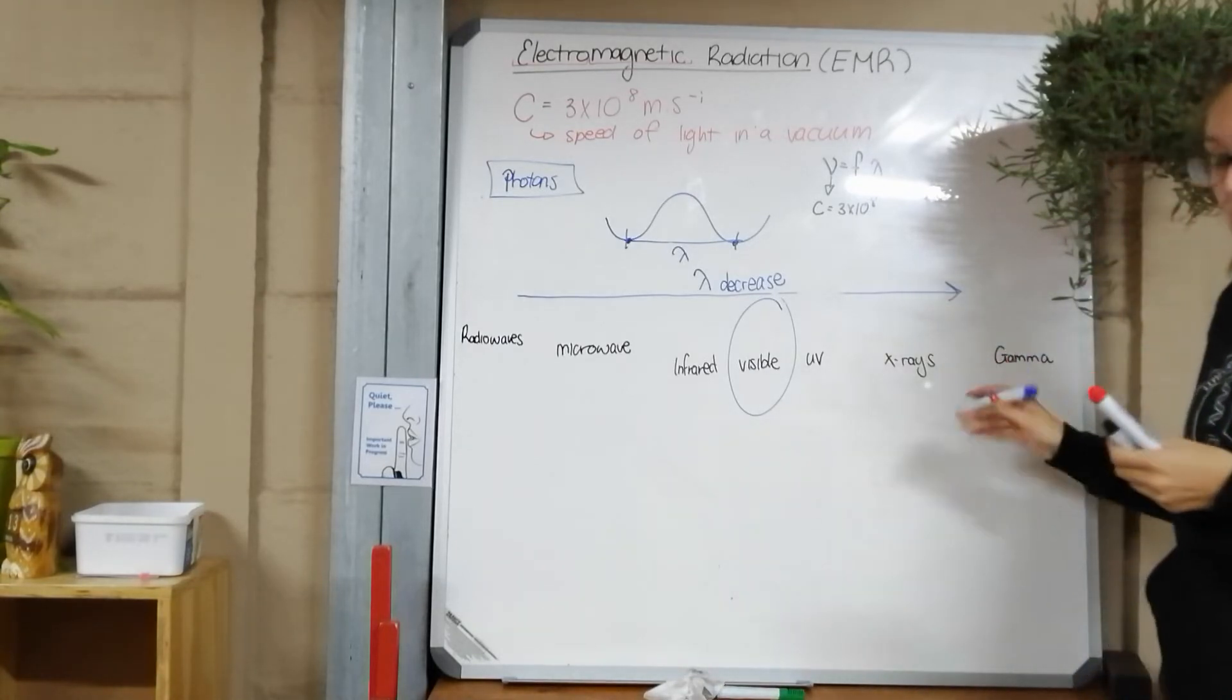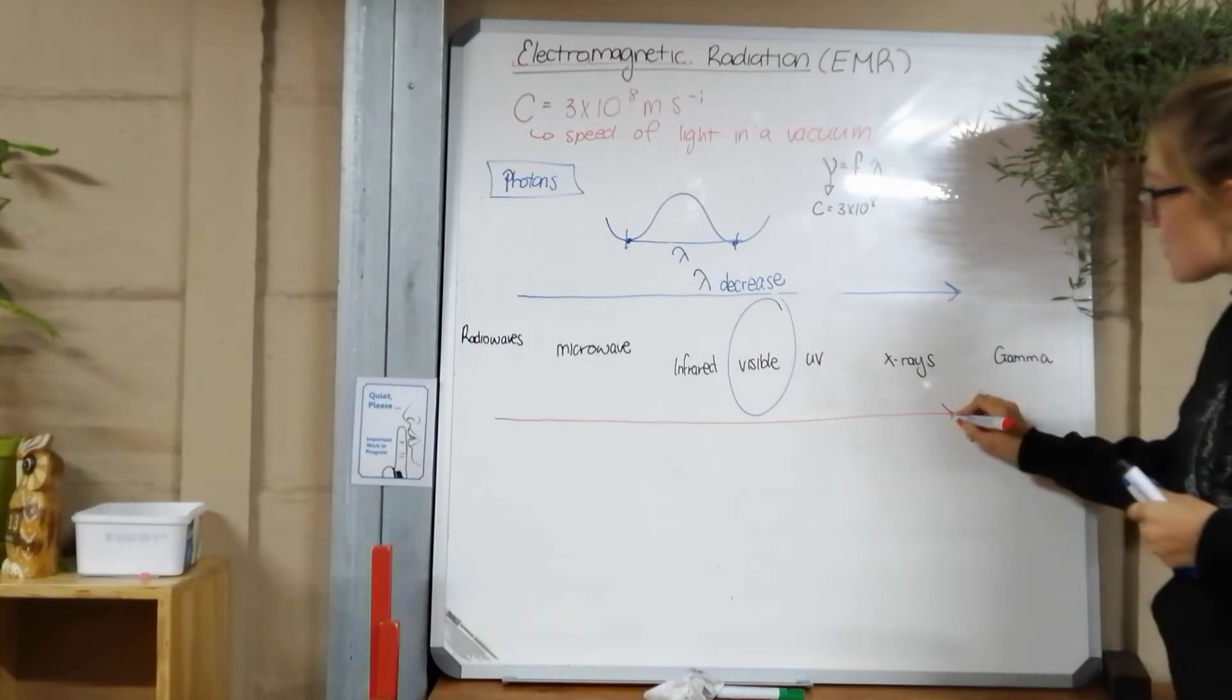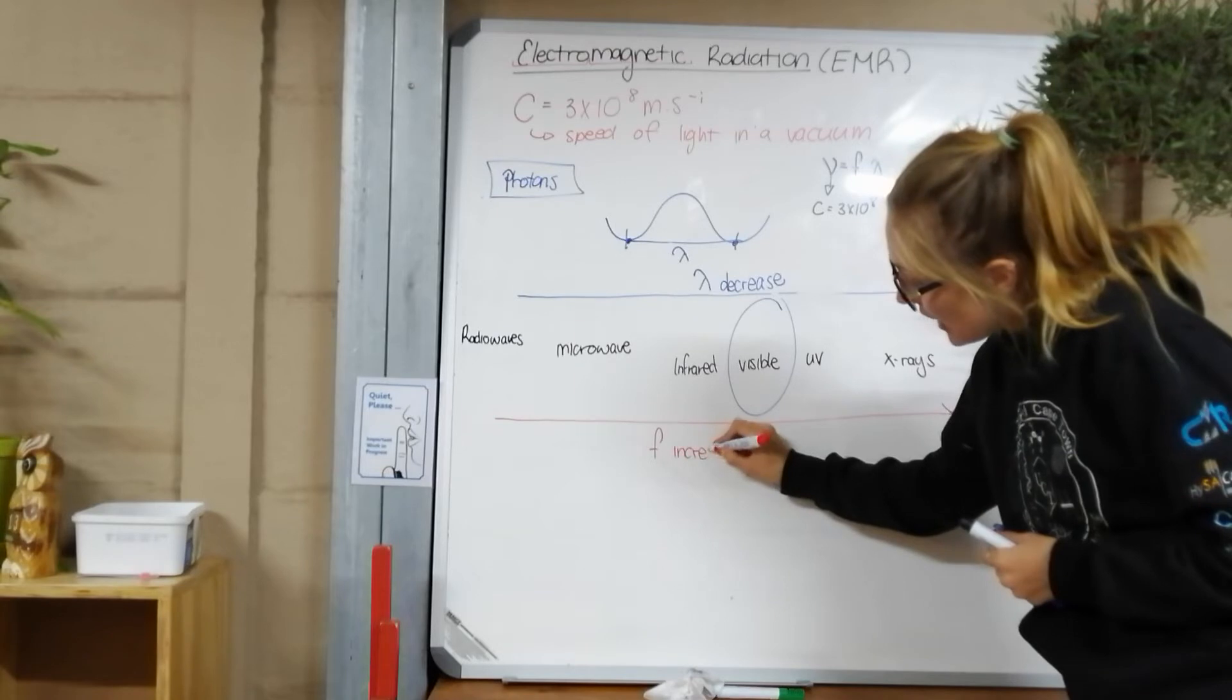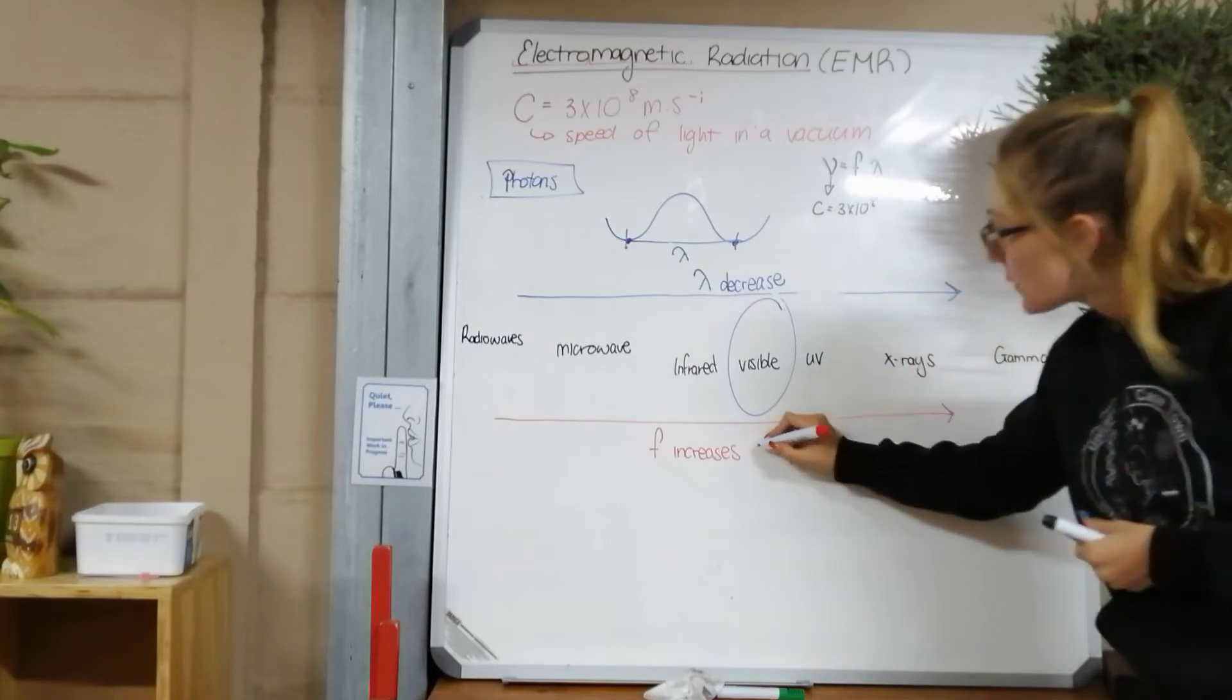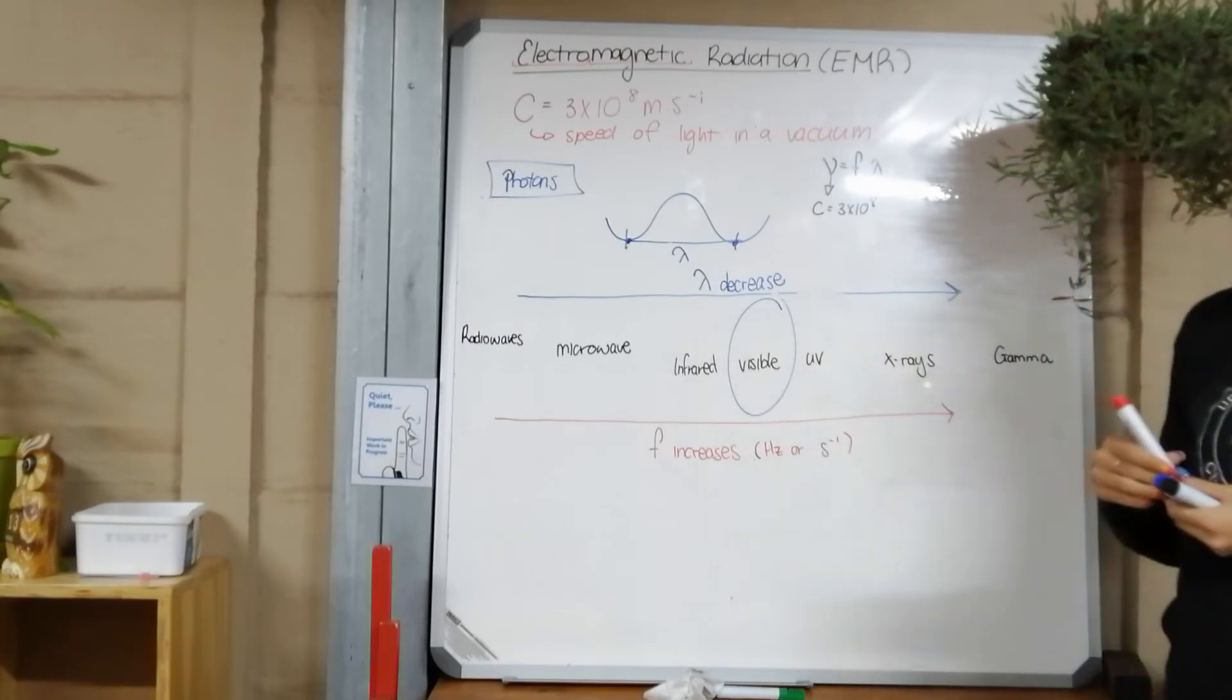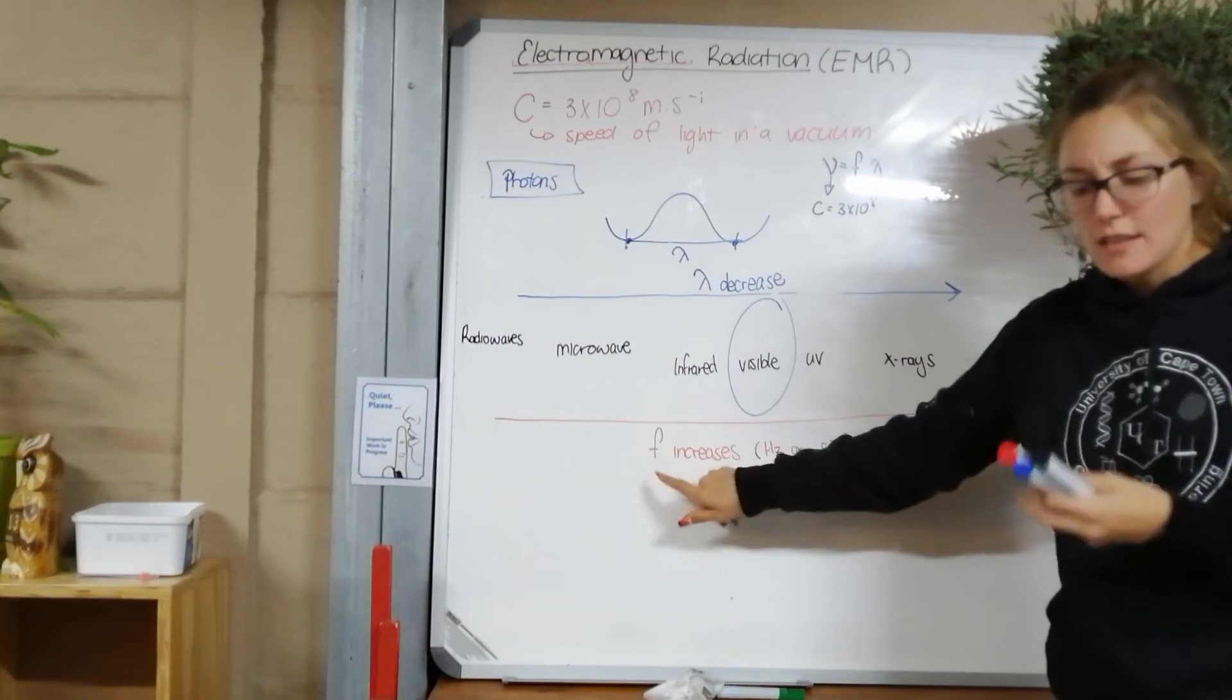And our frequency actually goes the other way. So as we move from radio waves up the spectrum towards gamma rays, our frequency increases. So remember, frequency refers to the number of complete waves that propagate per second. So frequency, this is your hertz or per second. It's how many waves are forming per second. Now, the important thing, the thing that affects our daily lives about this, is the frequency, and we're going to get to the calculations in a little bit.